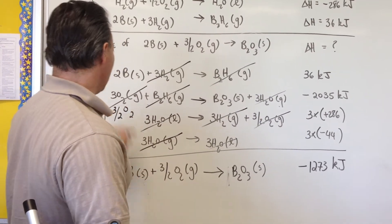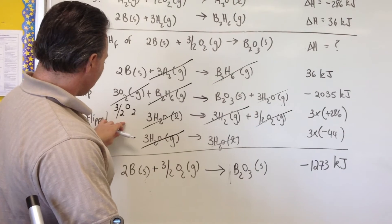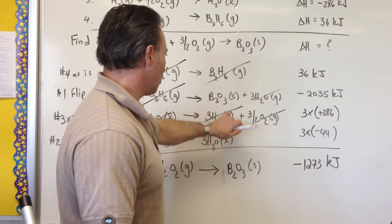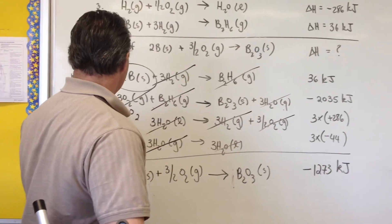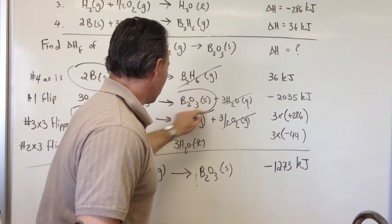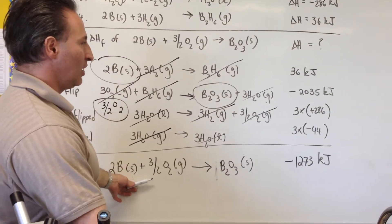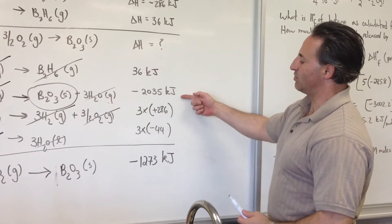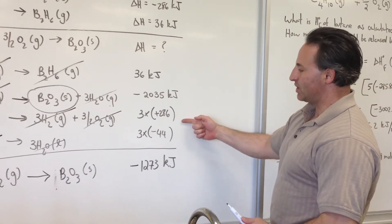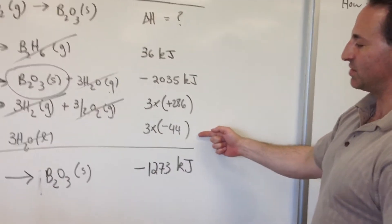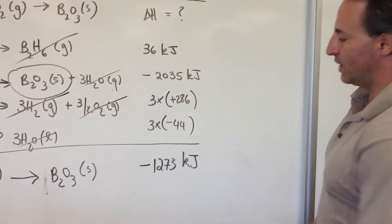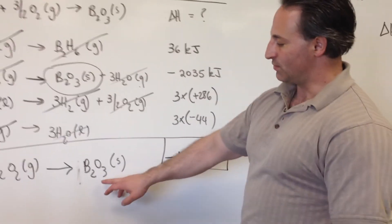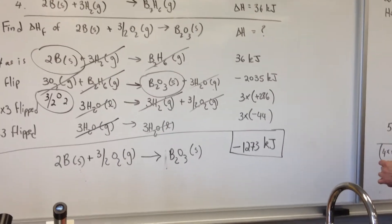And that's exactly what we're looking for. So we're left with 2 borons, 3 over 2 oxygens, and B2O3 as our final product. Then you do the math. You add up all the numbers: 36 minus 2035 plus 3 times 286 plus 3 times negative 44. You get a final answer of negative 1,273 kilojoules. That's the enthalpy of formation for diboron trioxide.